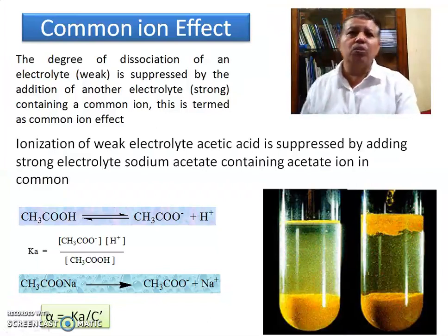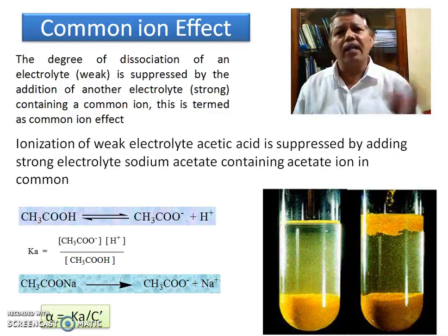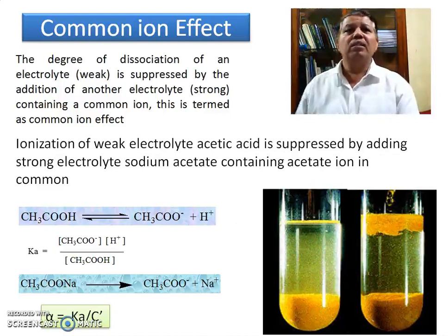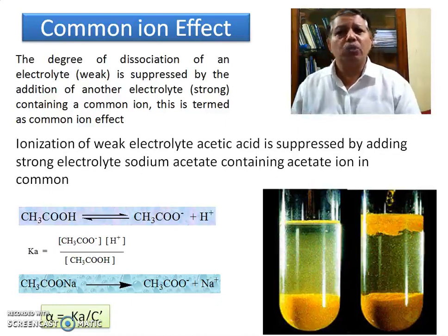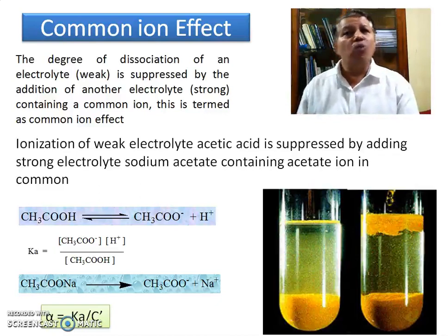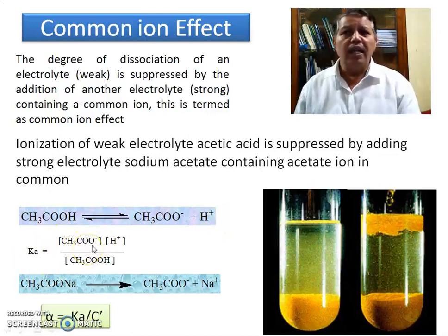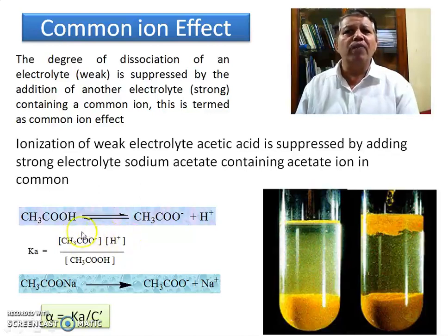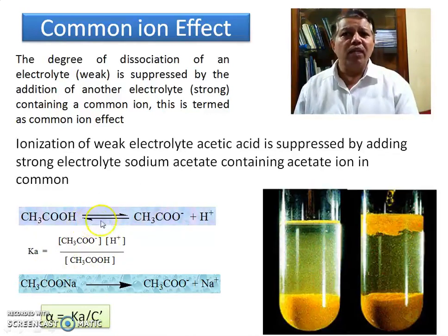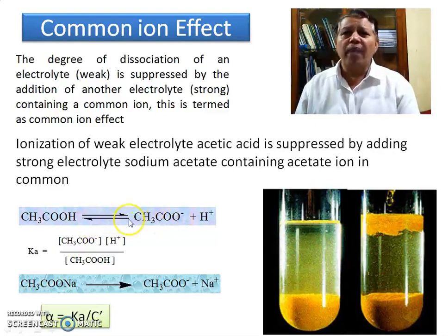The common ion effect affects the degree of dissociation. When a common ion is added to a dissociated solution, the precipitation or dissociation gets suppressed. For example, ionization of the weak acid acetic acid is suppressed by adding the strong electrolyte sodium acetate, which contains the acetate ion in common. Ka equals acetate ion concentration times hydrogen ion concentration divided by acetic acid concentration. When a common ion is added, the numerator value increases, and to keep Ka constant, the denominator also increases. The backward reaction takes place, increasing the concentration of acetic acid.